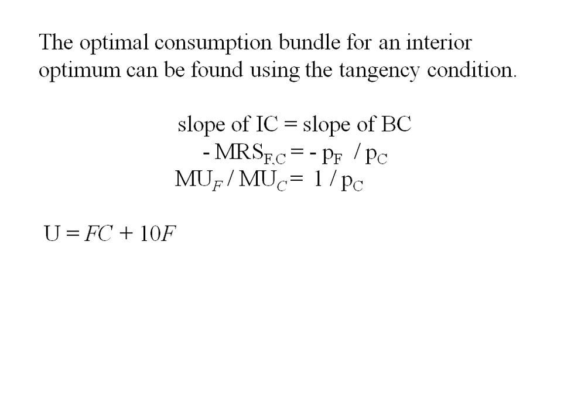I'll go back to my original utility function to find my marginal utilities. Differentiating utility with respect to food, I get C plus 10. Differentiating utility with respect to clothing, I get F. I take this information and plug it back into my marginal utility ratio: C plus 10 over F equals 1 over PC.